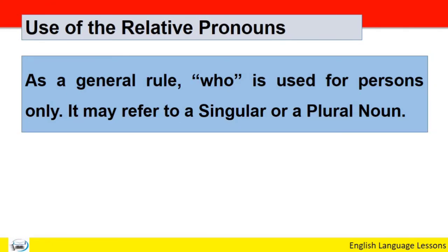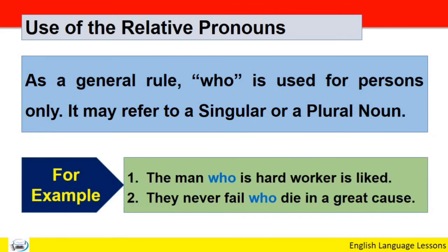Use of the relative pronouns — relative pronouns کون سا کہاں پہ استعمال ہوتا ہے۔ As a general rule, 'who' is used for persons only; it may refer to a singular or a plural noun. ایک عام قانون ہے کہ 'who' person کے لئے استعمال ہوتا ہے چاہے singular ہو یا plural۔ For example: 'The man who is a hard worker is liked.' 'They never fail who die in a great cause.' دونوں میں singular یا plural persons پہ 'who' بطور relative pronoun استعمال ہوا۔